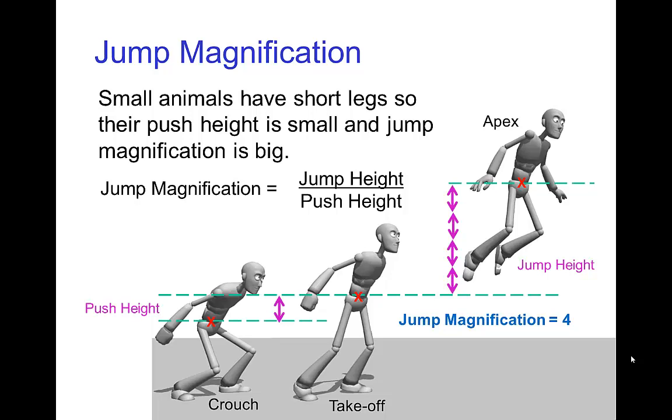We talked about jump magnification, which is the ratio of how high you jump to the distance that you push off when you push off from the ground, from crouch to take off. Small animals have short legs, and since they all jump to about the same height, the jump magnification tends to be large for small animals.